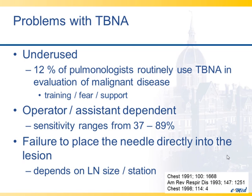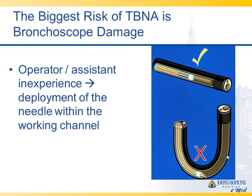The big problem with TBNA is that it's underused. A survey published in CHEST about 20 years ago showed that only 12% of pulmonologists were routinely using TBNA in the evaluation of hilar and mediastinal disease. The reason is that operators were not getting the results that Dr. Wang was getting — his yield was 90%, and if you start learning this and don't do it often, your yields are not going to be that high and then you stop doing it. We're also not getting the needle in the lymph node, which depends on lymph node size and station. The biggest risk of TBNA — and EBUS for that matter — is injury to the bronchoscope. It's very, very hard to hurt your patient with TBNA.